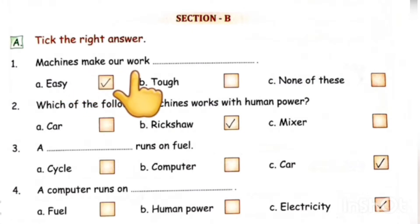First one is, Machines make our work. Machines aapna kam ki kar diya ne? Option A, easy. Option B, tough. Option C, none of these. Option A is the correct answer.